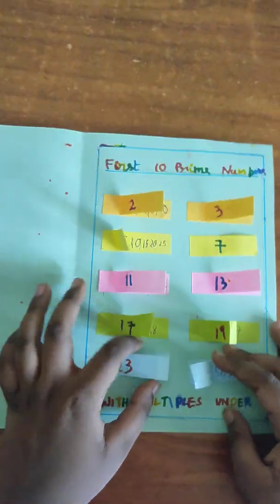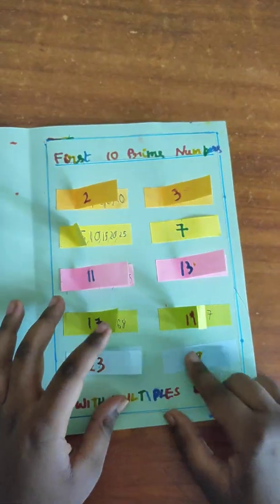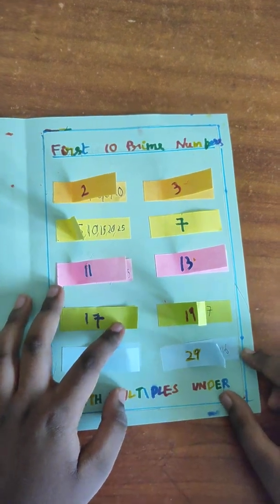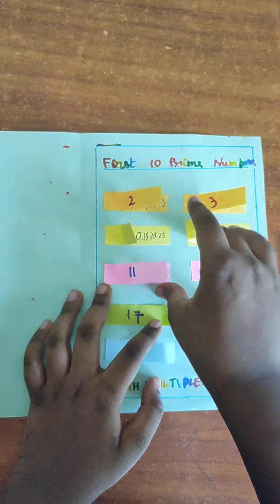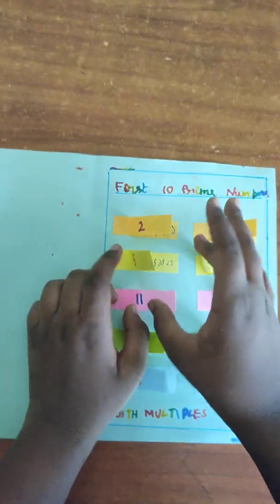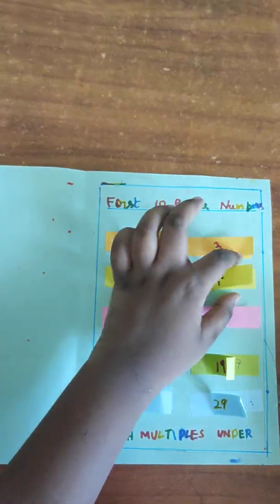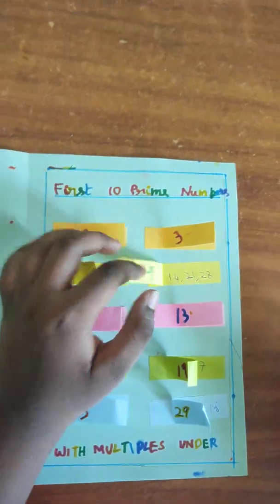Aditya selected the multiple of 7. It is 7. So the multiples of 7 are 14, 21, and 28.